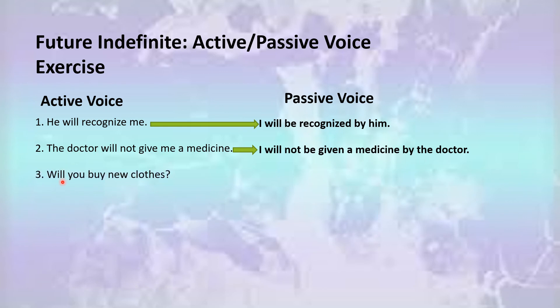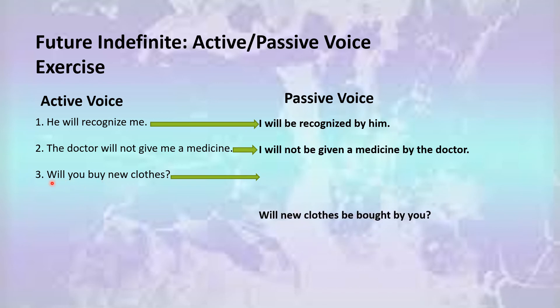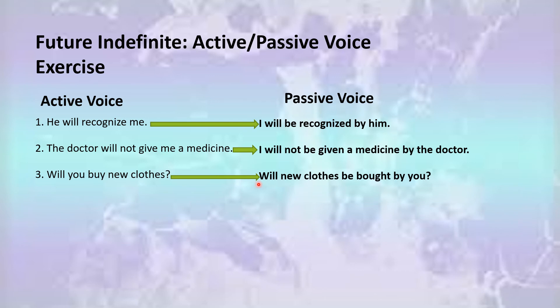Number three: 'Will you buy new clothes?' You see that 'new clothes' is the object, so you will take it out at the start of the sentence. Before that you will have 'will' because it is an interrogative sentence. Your sentence becomes: 'Will new clothes be bought by you?'